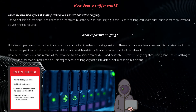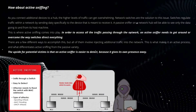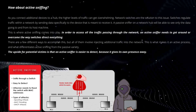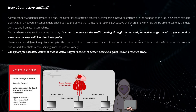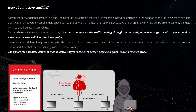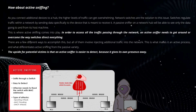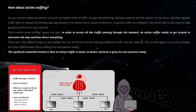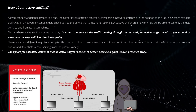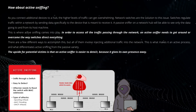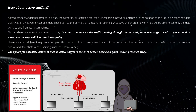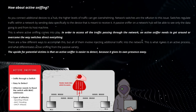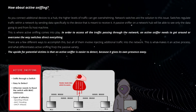As you connect additional devices to a hub, higher levels of traffic can get overwhelming. Network switches are the solution — they regulate traffic by sending data specifically to the device meant to receive it. A passive sniffer on a switched network will see only the data going to and from its host machine. To access all traffic passing through the network, an active sniffer needs to overcome how the switch directs everything, which involves injecting additional traffic into the network. This is what makes it an active process, and the upside for potential victims is that an active sniffer is easier to detect because it gives its own presence away.